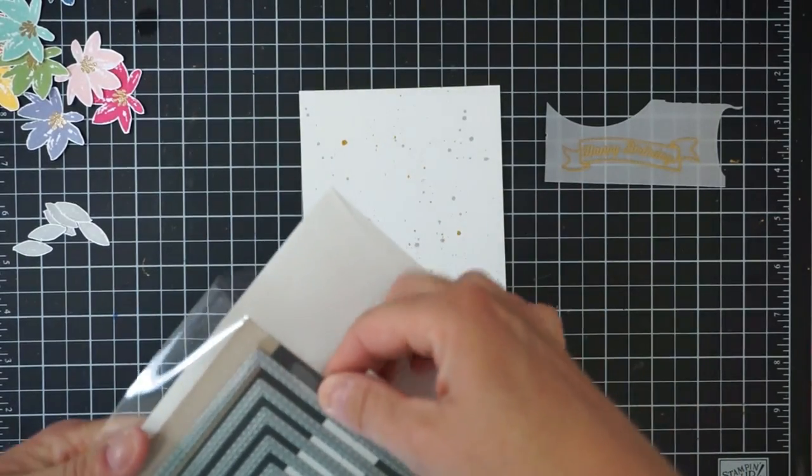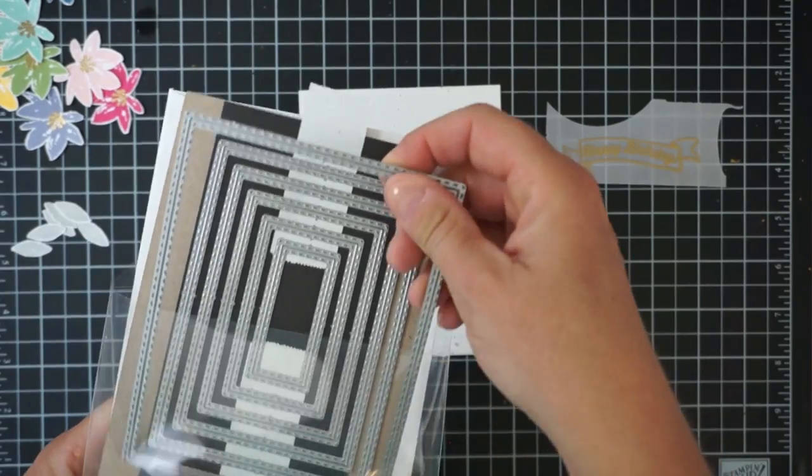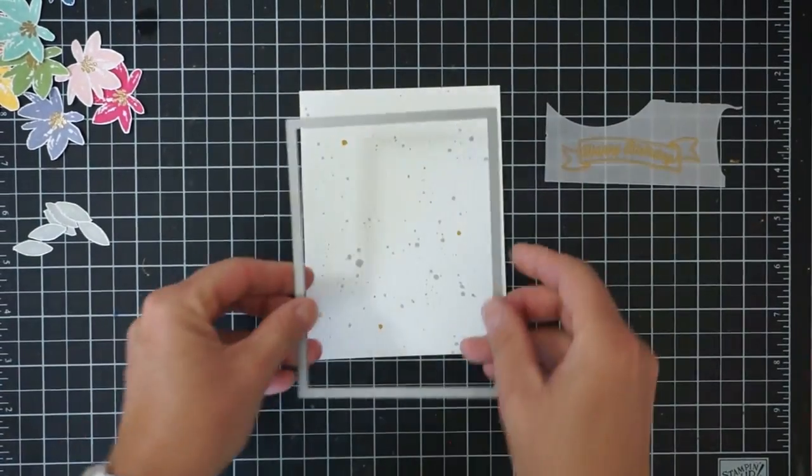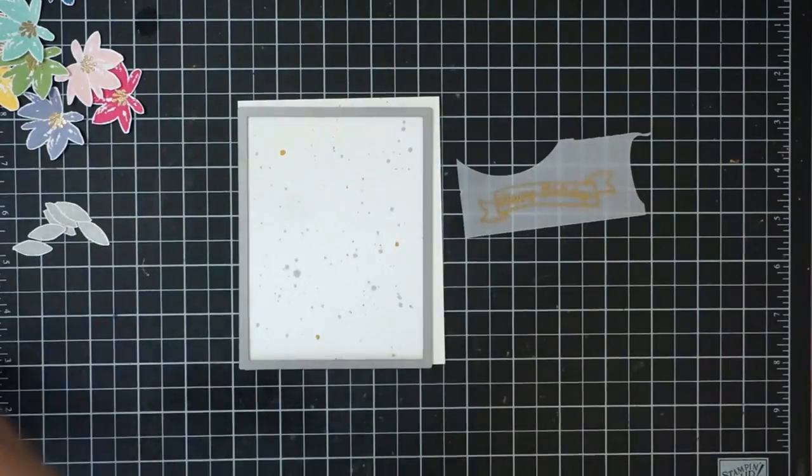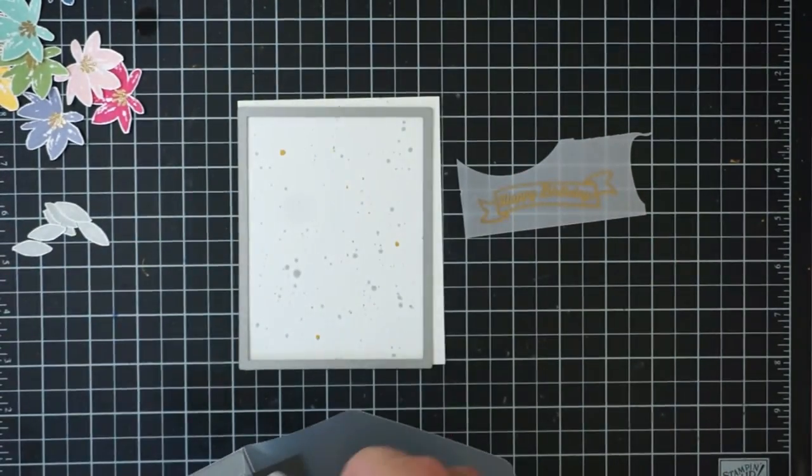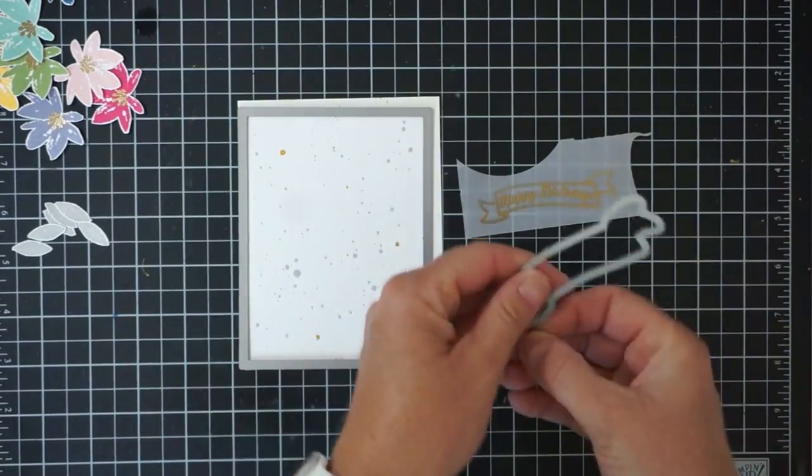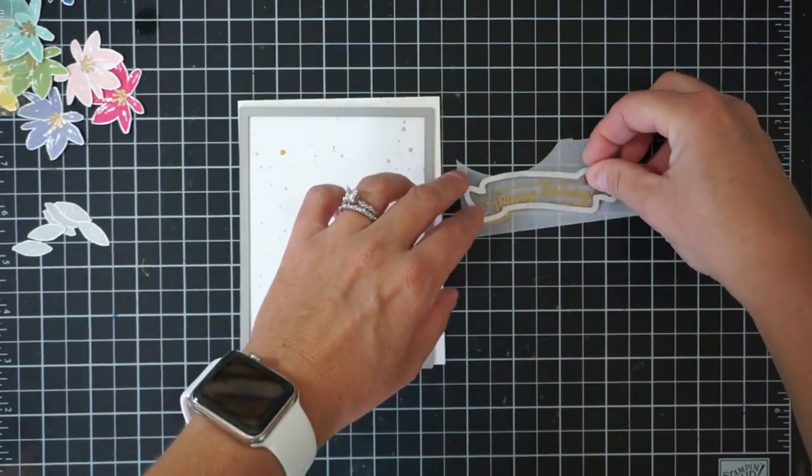I'm now going to cut out the background panel and the banner. I'm using some Simon Says Stamp stitched rectangles and then the coordinating banner die that goes with this stamp set, Bunches of Banners. I'll run those through my Big Shot and then they'll be ready to go.